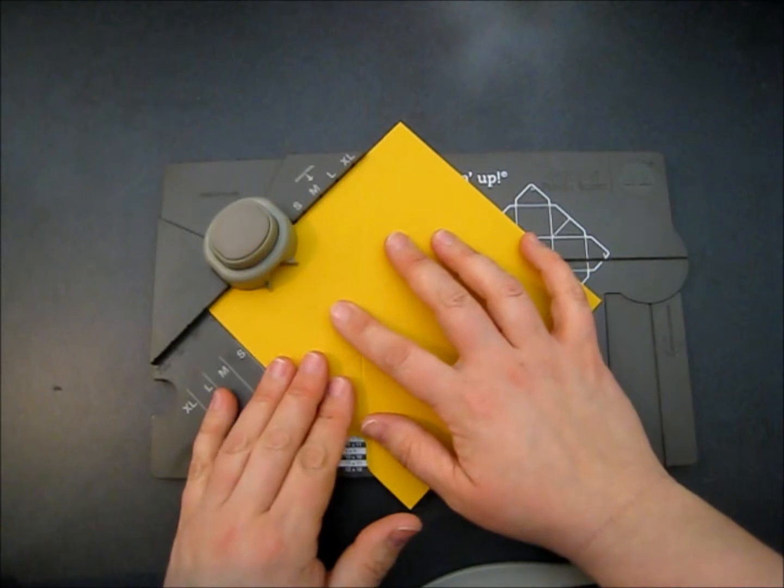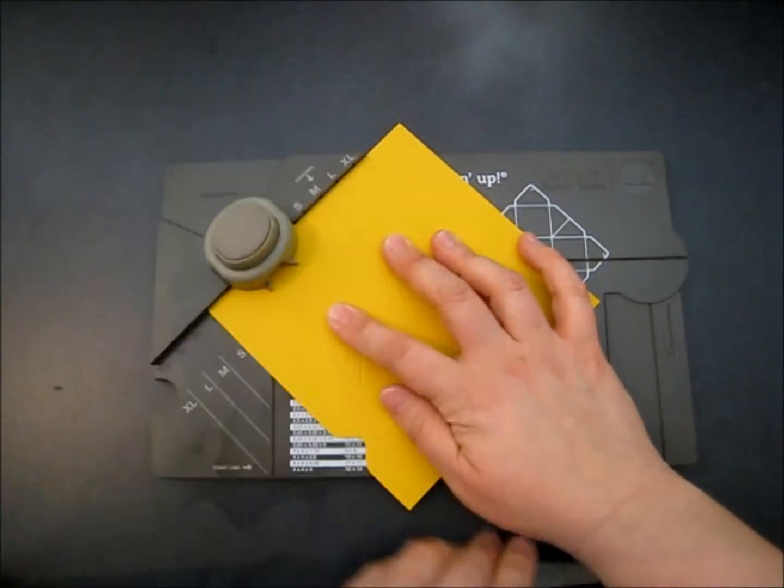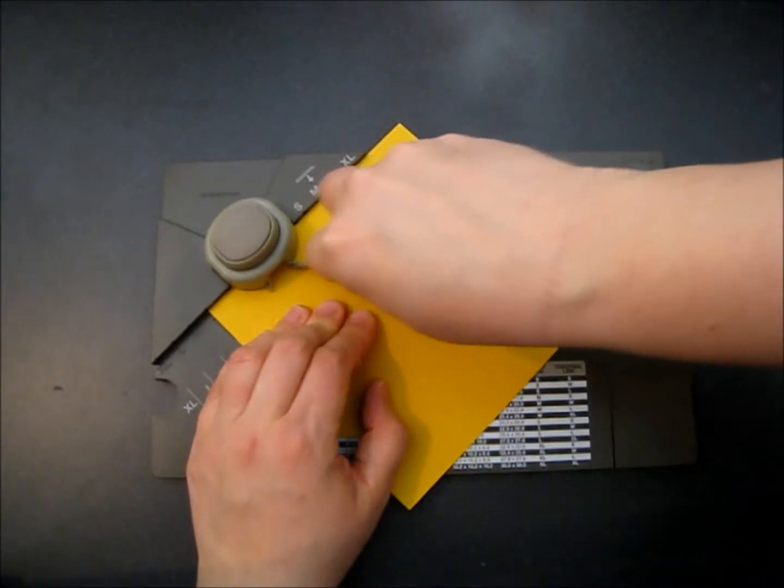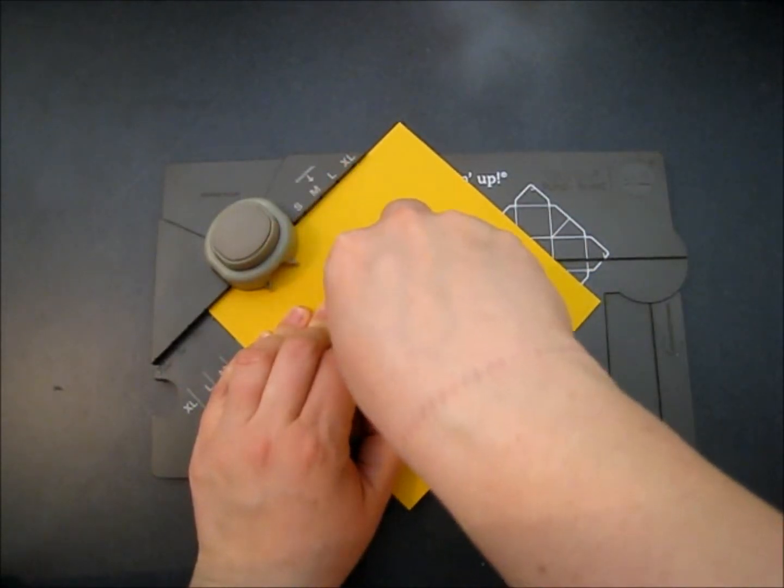We're going to go in again. Small. Score down. Across. And diagonal.